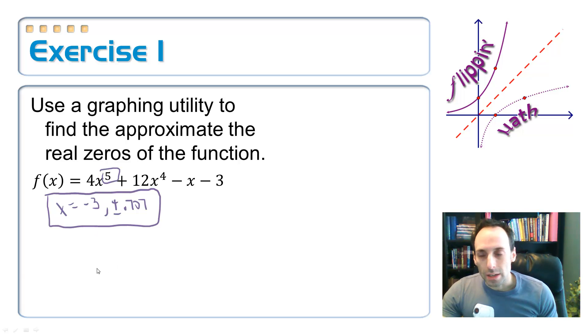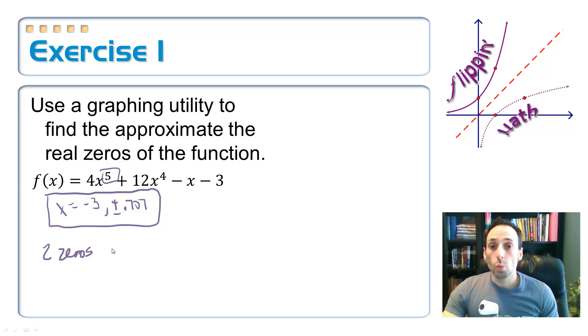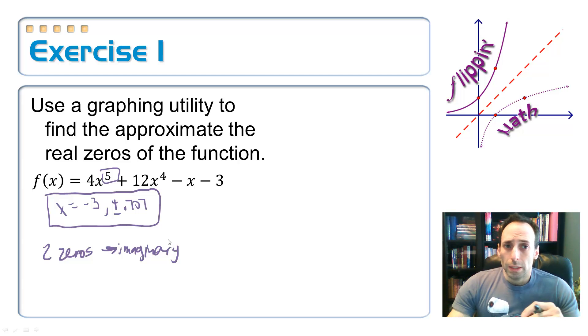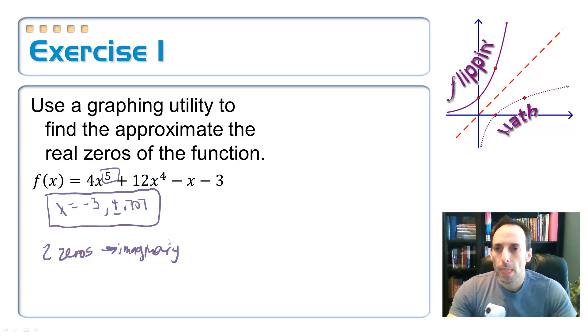What does that mean? Well, that means that two of the zeros must have been what kind? Imaginary. And, of course, we're not going to be able to find those with the graphing calculator. We're just going to be able to find the real ones where they cross the x-axis. All right. There's a couple of exercises for you to try in the next video. Thank you.